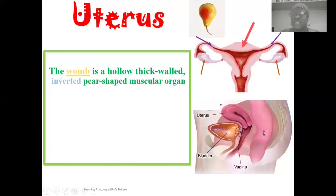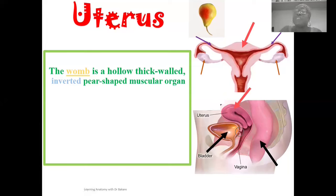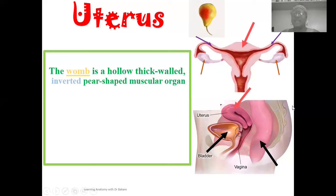Looking at this image, the uterus is sandwiched between the urinary bladder anteriorly and the rectum posteriorly. Within the female pelvis, you have the uterus sandwiched between the urinary bladder in the front and the rectum behind. These two structures are creating structural support for the uterus.